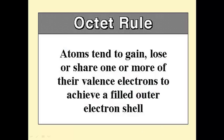The arrangement of 8 electrons in the outermost shell is called a stable octet. Atoms tend to gain, lose, or share one or more of their valence electrons to achieve a filled outer electron shell.